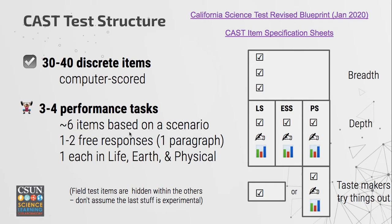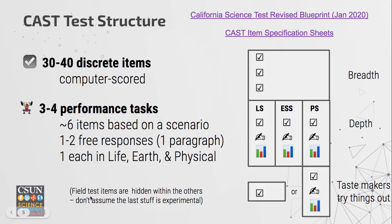Performance tasks are still delivered by computer but they are six items together based upon a single scenario that connect to one another. Usually one to two of those are free response questions where students type in one paragraph or so for each one. There is a performance task for life science, one for earth science, and one for physical science — all three are represented. The discrete items are designed for breadth, while the performance tasks are the depth ones.